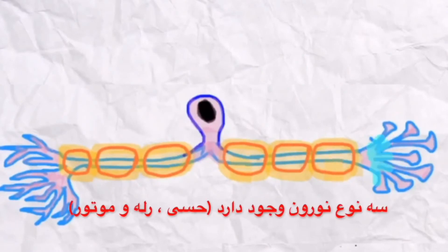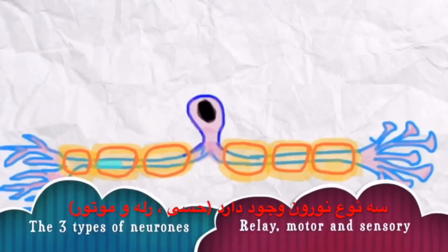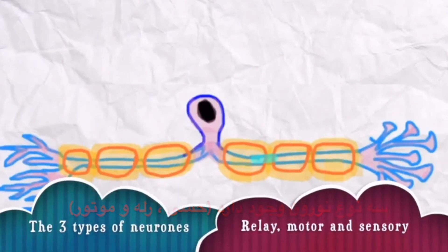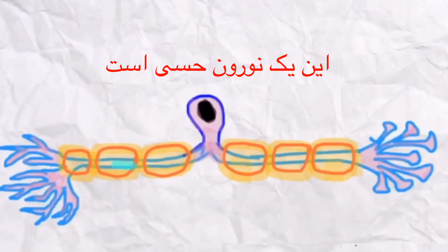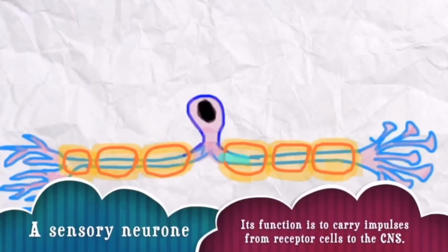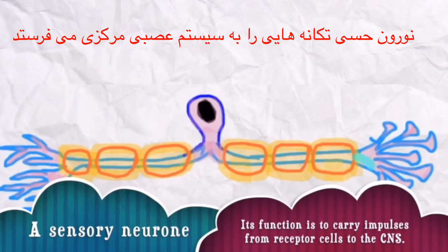There are three different types of neurons: relay, motor, and sensory. The neuron currently on the screen is a sensory neuron. The function of the sensory neuron is to carry impulses from the receptor cells to the central nervous system.